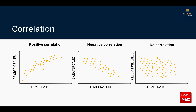The third scatter plot shows the relationship between temperature and cell phone sales. Temperature does not impact how many cell phones are sold. The reason why someone buys a cell phone is not because of hot or cold weather — it's because they broke their cell phone, lost it, or just want to buy the new version. So there is no relationship between temperature and cell phone sales. Whenever we see a scatter plot where the points are scattered without any pattern, that shows there is no relationship between the two variables.